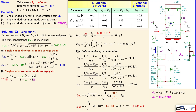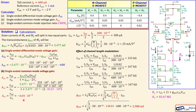Substituting ro5 = 167 kΩ, gm5 = 2.988 mS, and ro3 = 167 kΩ into the cascode expression gives Ro ≈ 83.67 MΩ (almost 84 MΩ). Substituting into the common mode gain expression gives a single-ended common mode gain of approximately -6.64 × 10⁻⁴, which is very close to zero.